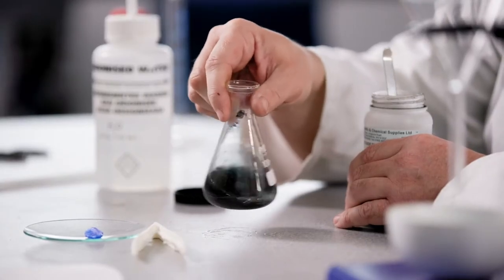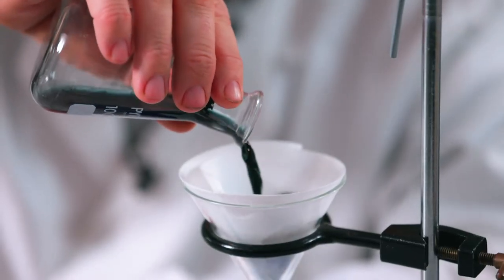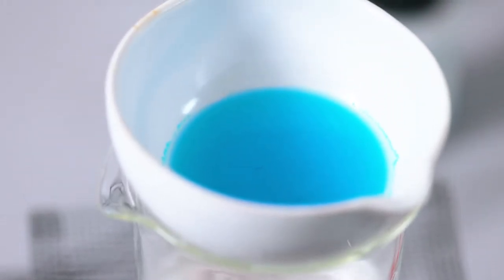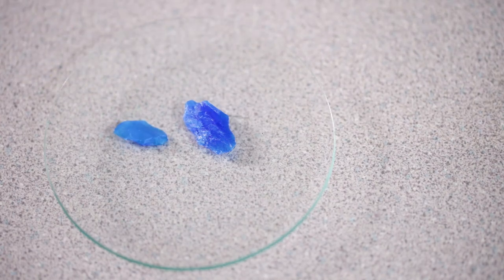The reaction we're going to be looking at today is between solid copper oxide and sulphuric acid. The produced copper sulphate solution will then be partially evaporated and after a few days pure copper sulphate crystals will be produced.